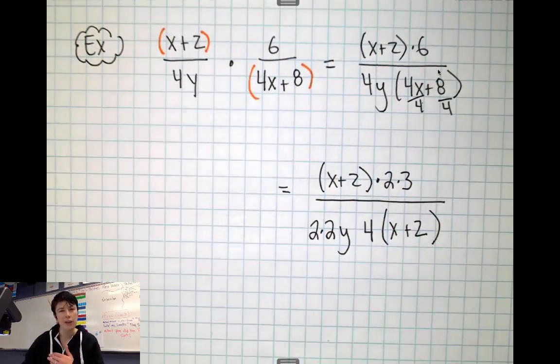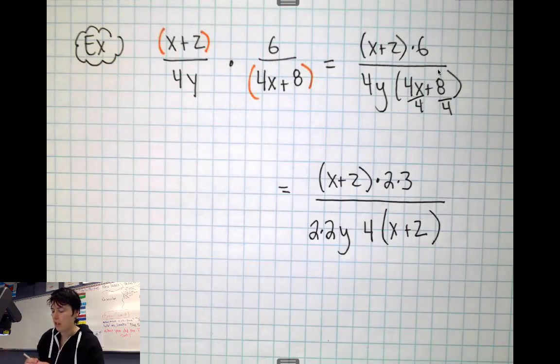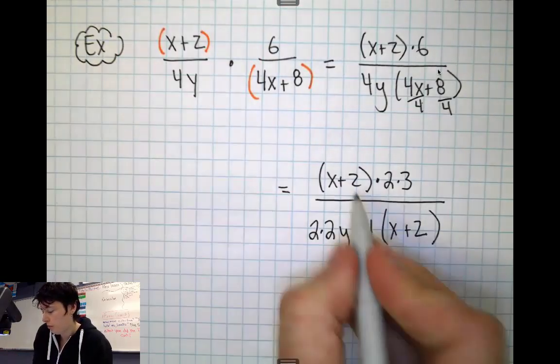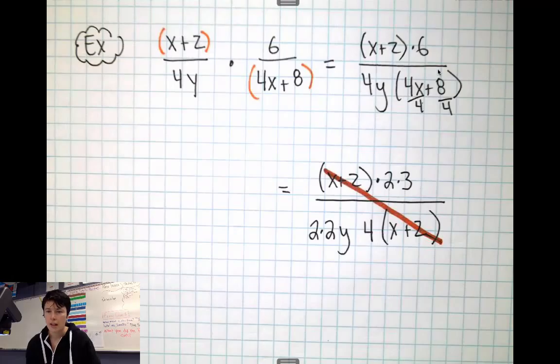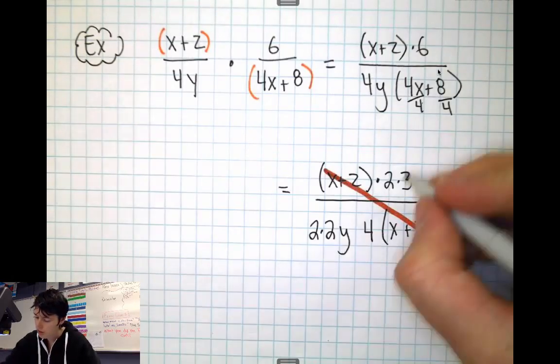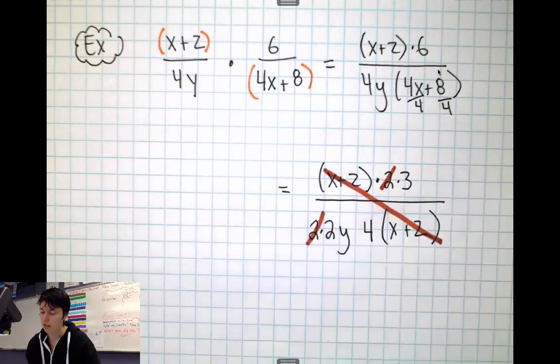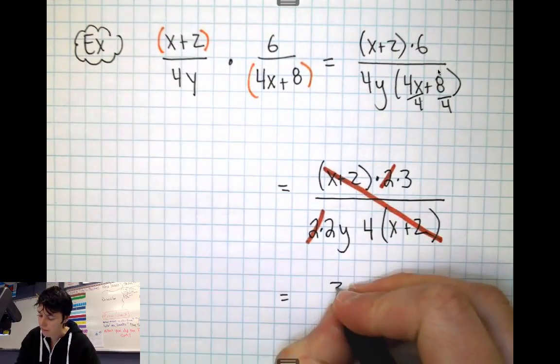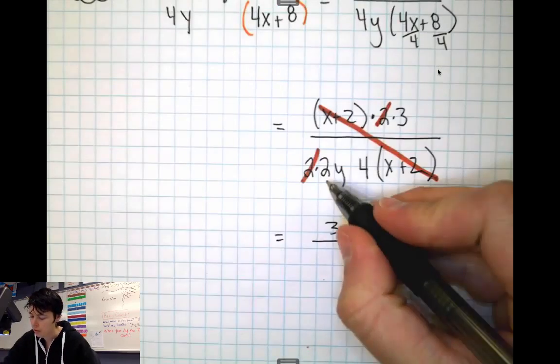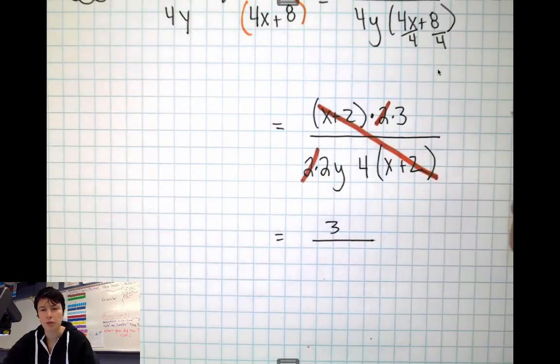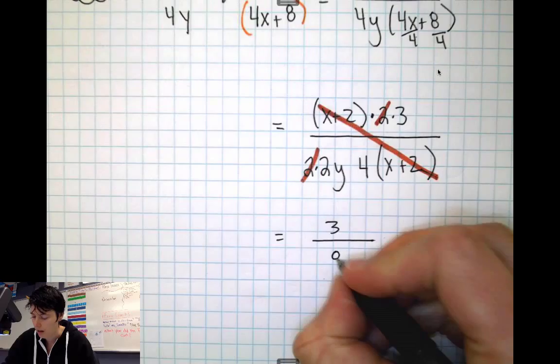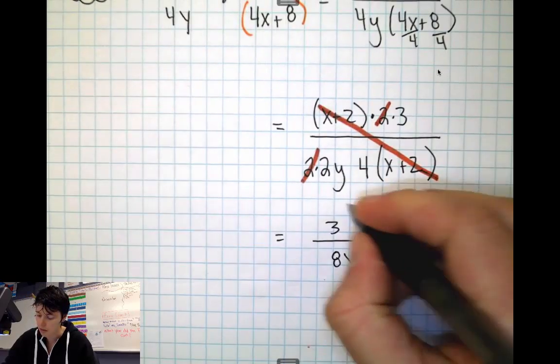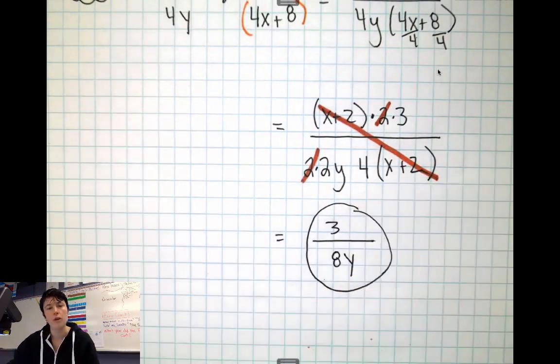And then anything I can get rid of I should. So I definitely see the (x+2)'s, let's get rid of those. And I also definitely see the 2 and the 2 here. I think that's it. So left on top of my fraction, I'm left with a 3. And left on bottom I have 2y times 4, so 2 times 4 is 8y. So this entire thing is going to reduce down to 3/(8y).